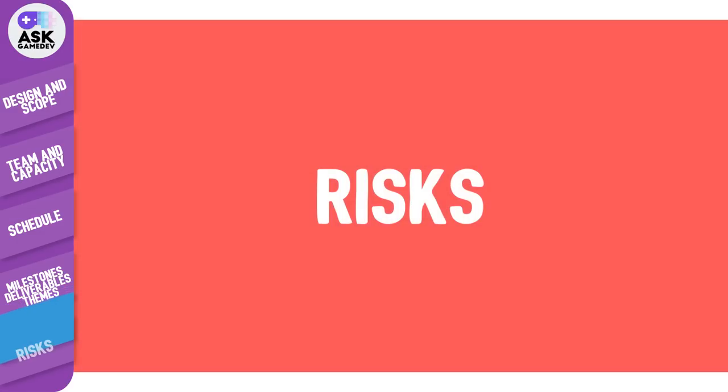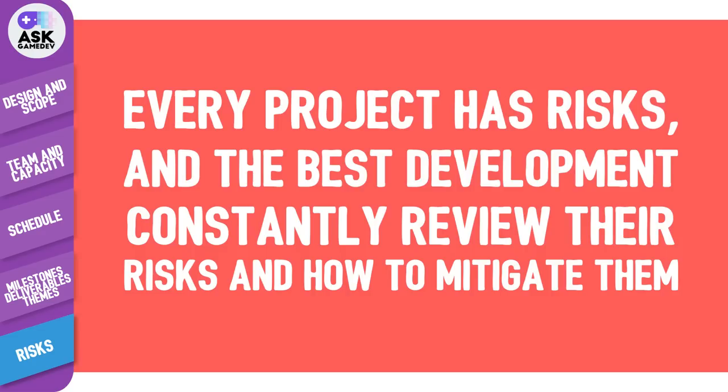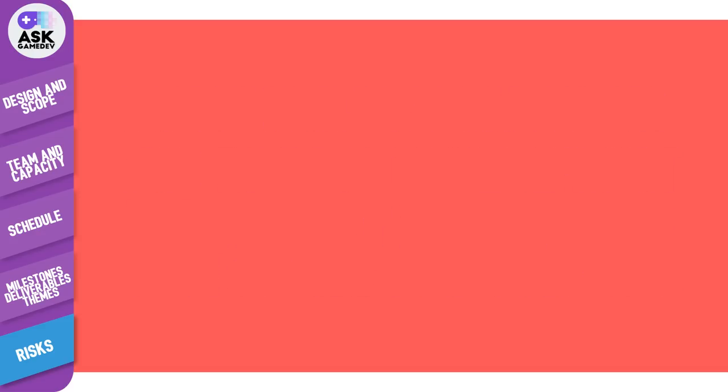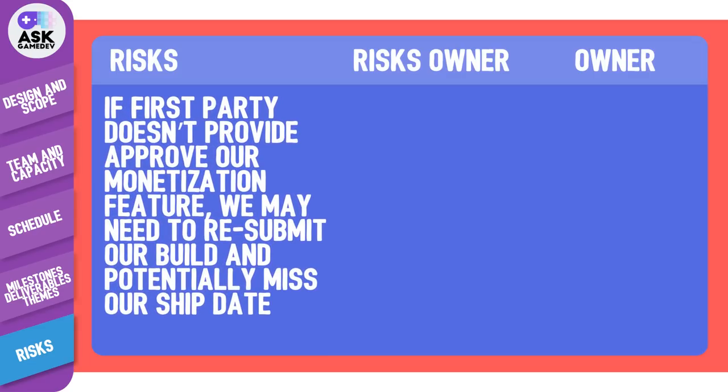And lastly, let's talk about risks. A final piece of your development plan is to define the project risks — things that could affect the cost, duration, or quality of development output. Every project has risks, and the best developers constantly review and figure out how to mitigate them. A good test is to ask yourself if the team has complete control over that issue. If the answer is yes, then it probably isn't a risk — it might just be difficult and something financiers will expect the team to navigate.